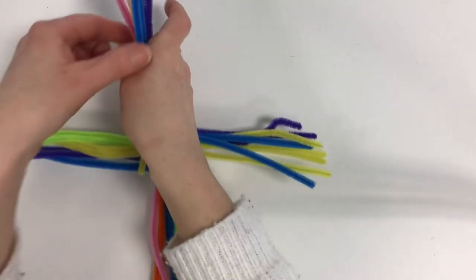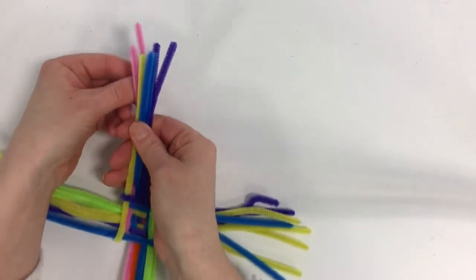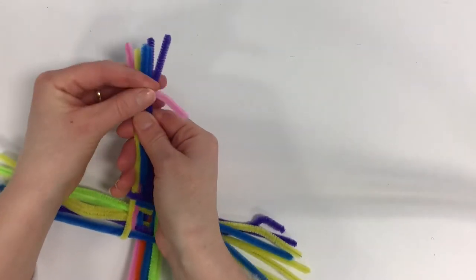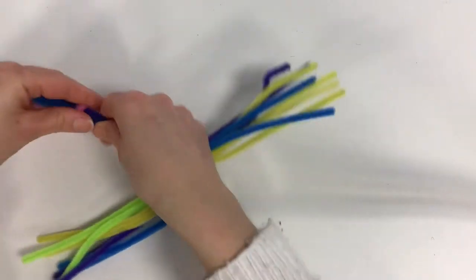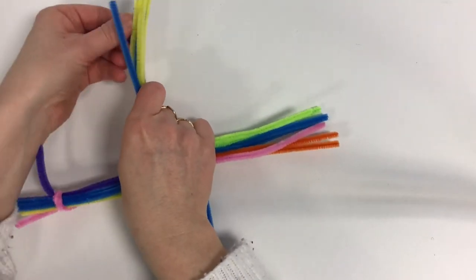To secure the ends, you can just take one of the reeds, take one of the longer ones, and wrap it around. Do that on all four sides of the cross.